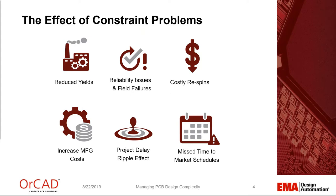If you're not managing these constraints, you have reduced yields, reliability issues — sometimes it works, sometimes it doesn't. Re-spins are another big factor. Spending time in the lab trying to get things working is something that most design schedules really can't absorb. And of course, increasing manufacturing costs — your yield is going down because certain rules haven't been taken into consideration. Then there's the ripple effect where systems of systems hold up the entire larger system, causing you to miss time-to-market schedules and projects get canceled.